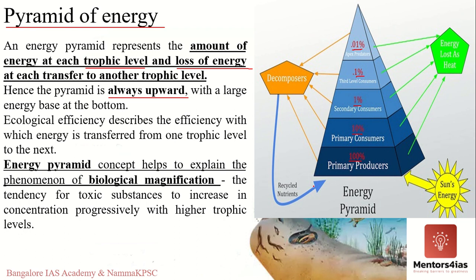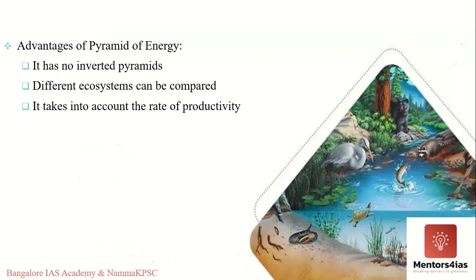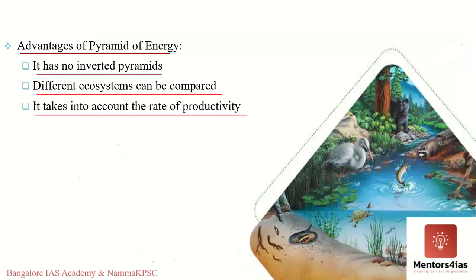The pyramid of energy also helps explain biomagnification — the tendency for toxic substances to increase in concentration at progressively higher trophic levels. This concept will be covered in the next video. The pyramid of energy is more advantageous than the other two pyramids because there are no inverted pyramids, the shape and orientation never change, different ecosystems can be easily compared, and it takes into account the rate of productivity.